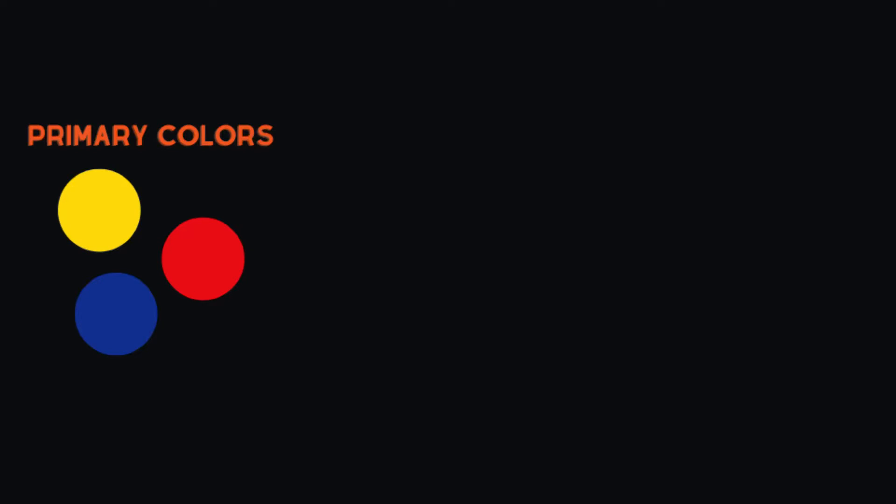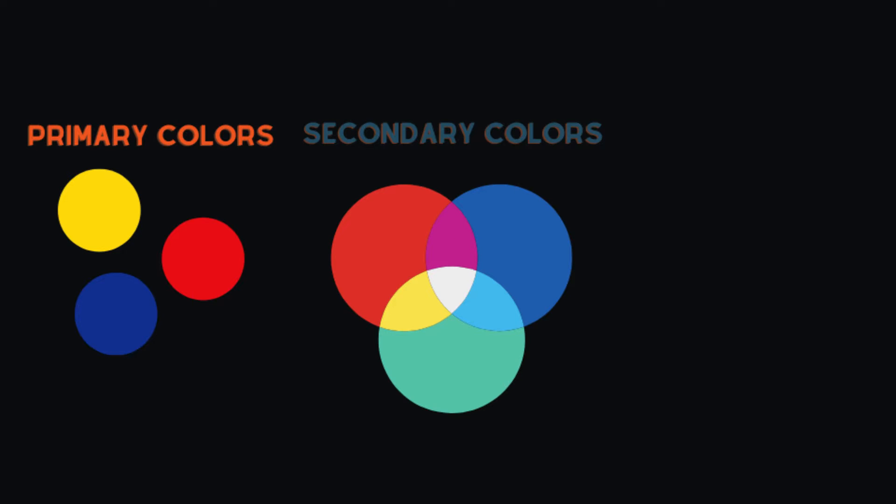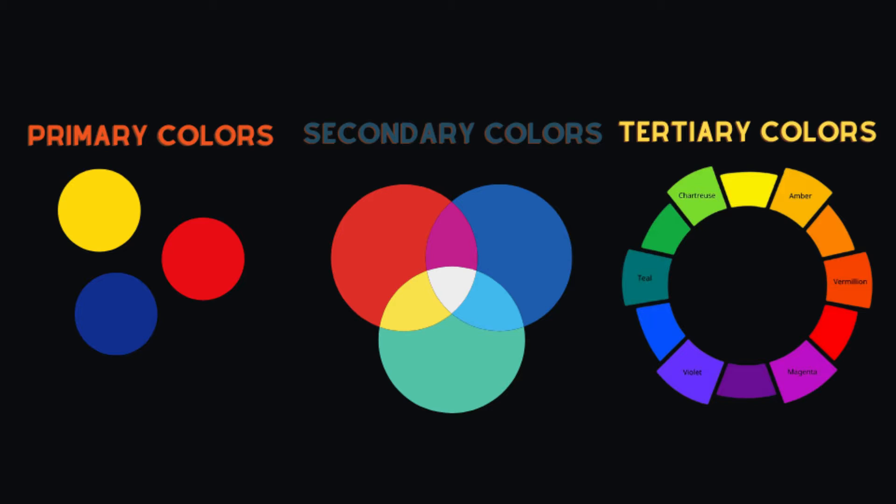Believe it or not, it was actually Sir Isaac Newton who established color theory when he invented the color wheel in 1666. He then went on to categorize colors into three distinct categories. First we have primary colors — most of us learned in elementary school, that's red, yellow, blue — these are the fundamental building blocks of all other colors. He had a second group called secondary colors, which were mixes of primary colors, so for example red and blue makes purple.